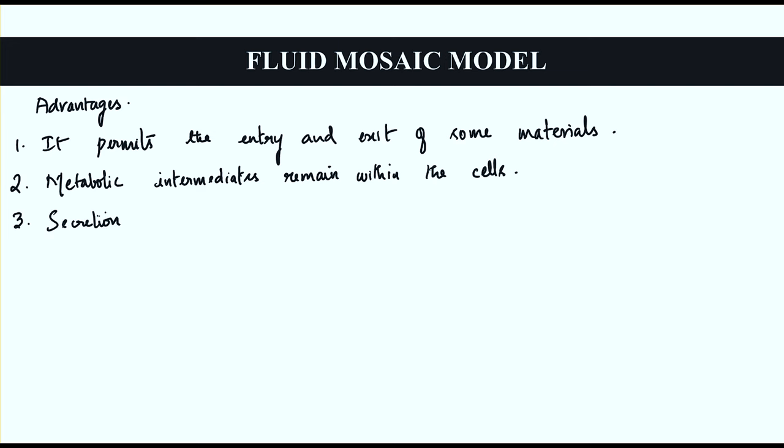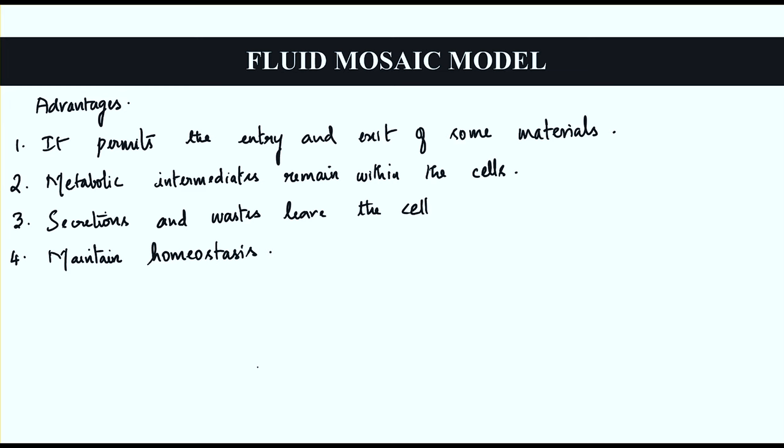The third advantage is that secretions and waste leave the cell through the selectively permeable membrane. The fourth advantage is that it maintains homeostasis — maintaining the internal stability of the cell while adjusting to changes in the external environment, so the external environment does not negatively affect the cell.